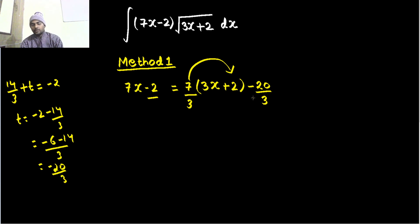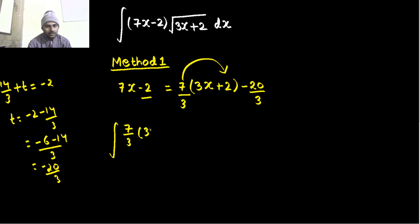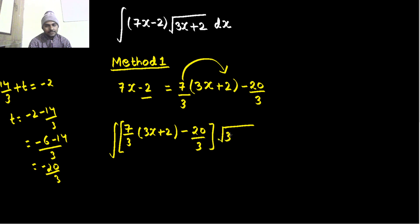The same thing we can do with the lambda-mu method also, but first let's integrate it. Now as you can see, we have written 7x minus 2 as 7 by 3 times (3x plus 2) minus 20 by 3, and this is being multiplied by the square root of (3x plus 2).